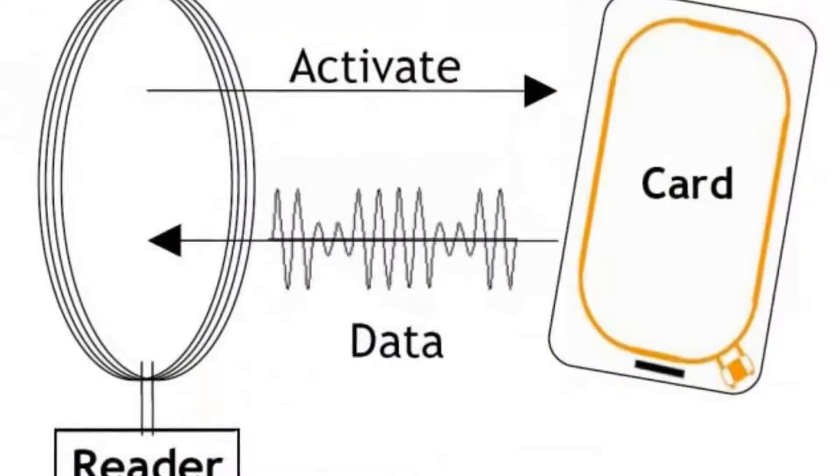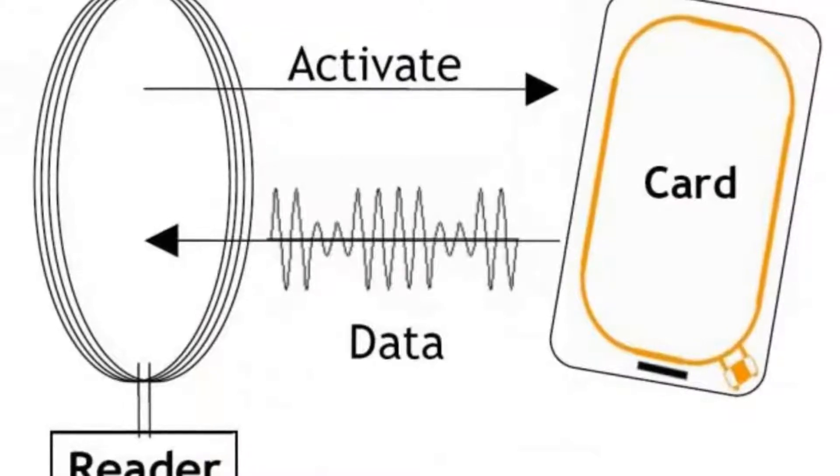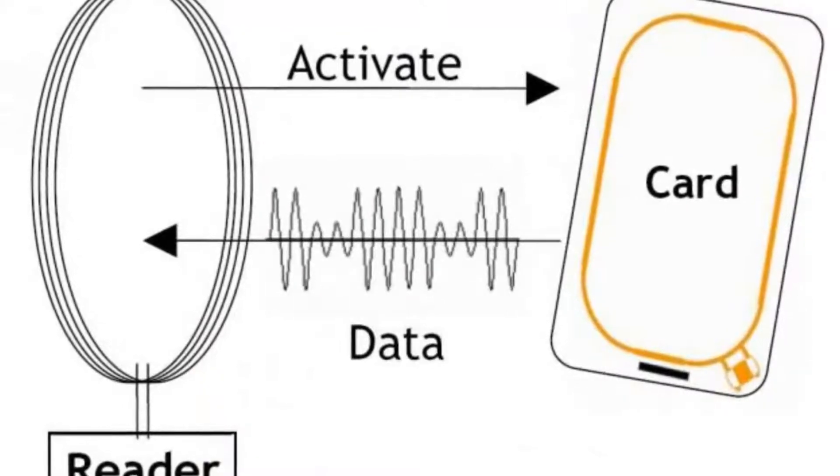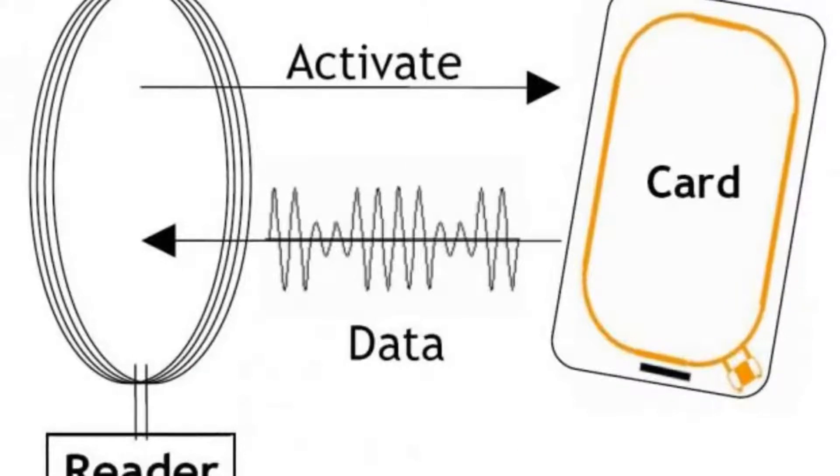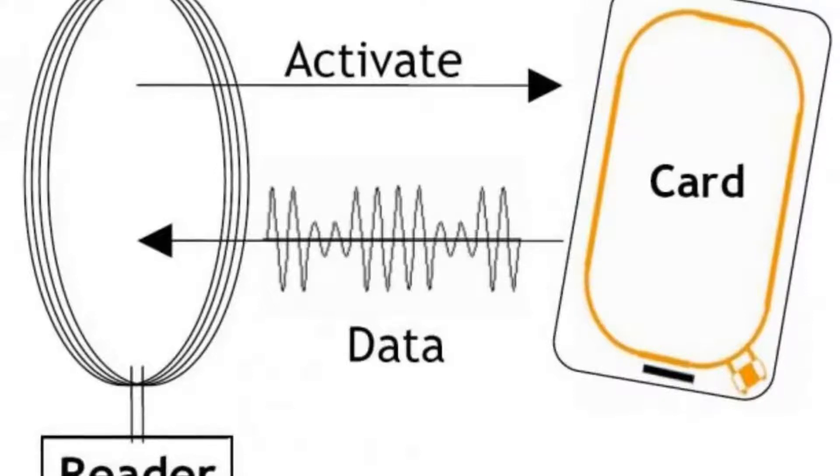RFID mainly contains two main parts: RFID reader and RFID card. The RFID reader continuously sends radio waves. So whenever an RFID card is in the range of this reader, it sends a feedback signal to the reader. It is very similar to the technology used in barcodes.